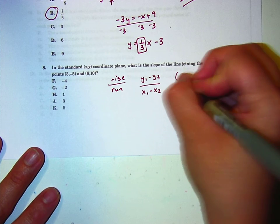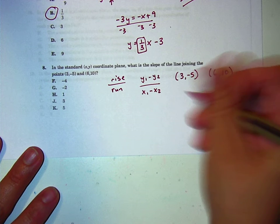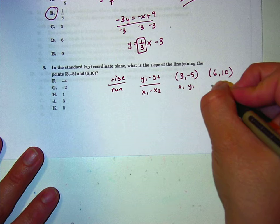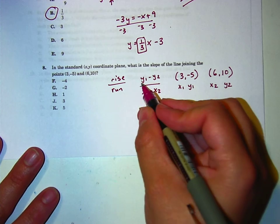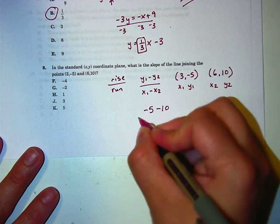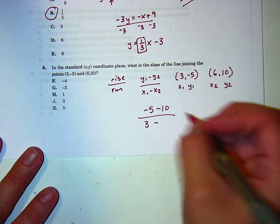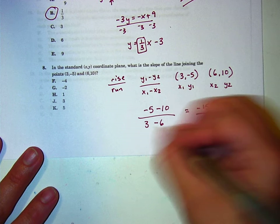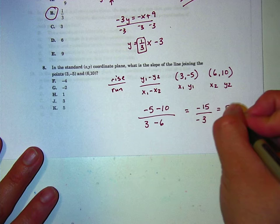So, it doesn't matter which, I'll rewrite them so that it's a little easier to see over here. It doesn't matter which one you use where. So, if you say this is point 1, sure, that's x1, y1, and this one's x2, y2. So, I'm gonna take y1 minus y2, that's negative 5 minus 10. And on the bottom is x1, which is 3, minus x2, which is 6. That makes negative 15 divided by negative 3?